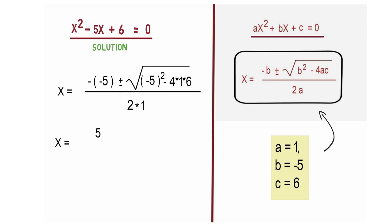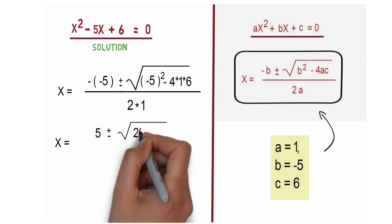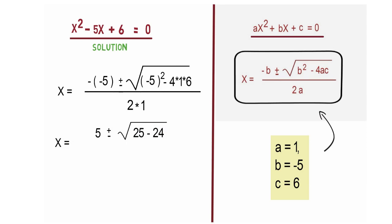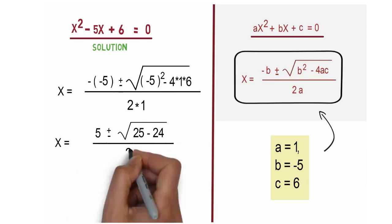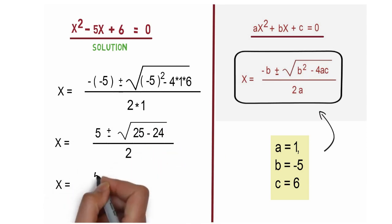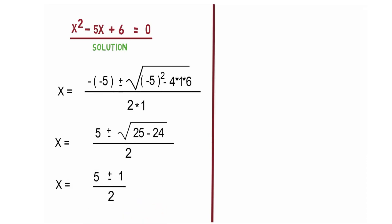We can write x = (5 ± √1)/2, or x = (5 ± 1)/2. That is, x = (5 + 1)/2 or x = (5 - 1)/2.